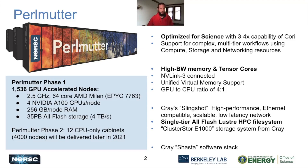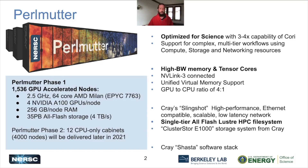Perlmutter phase one has been almost completed and it consists of 1,500 GPU-accelerated nodes. These nodes contain a 64-core AMD Milan CPU and four Nvidia A100 GPUs.